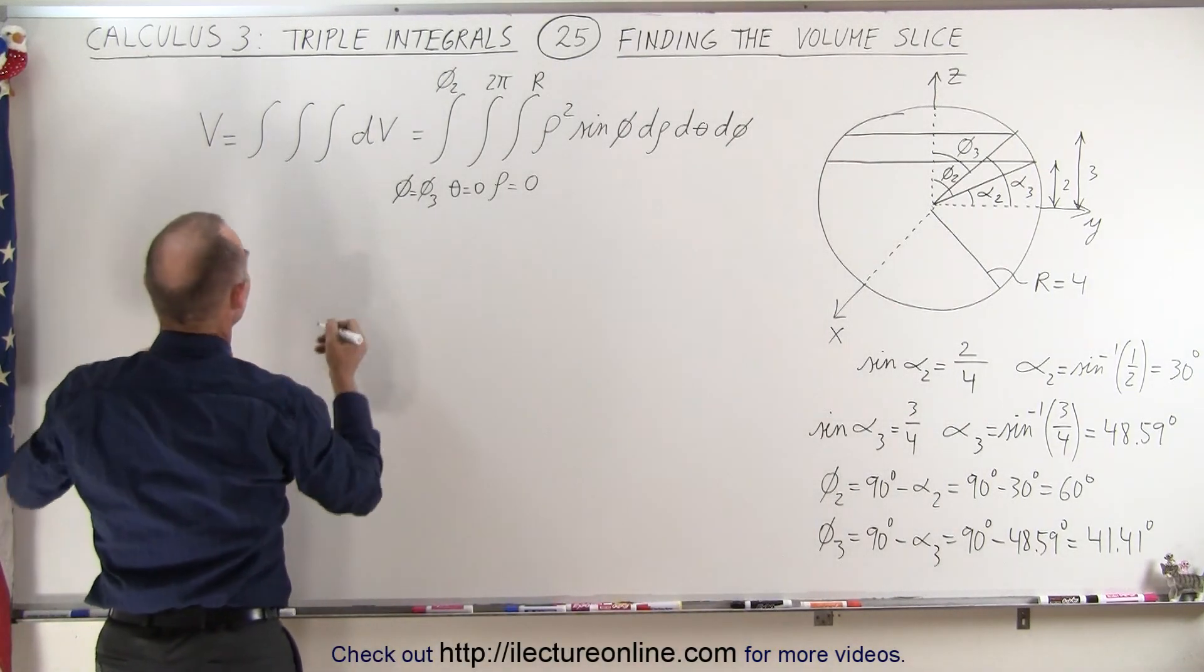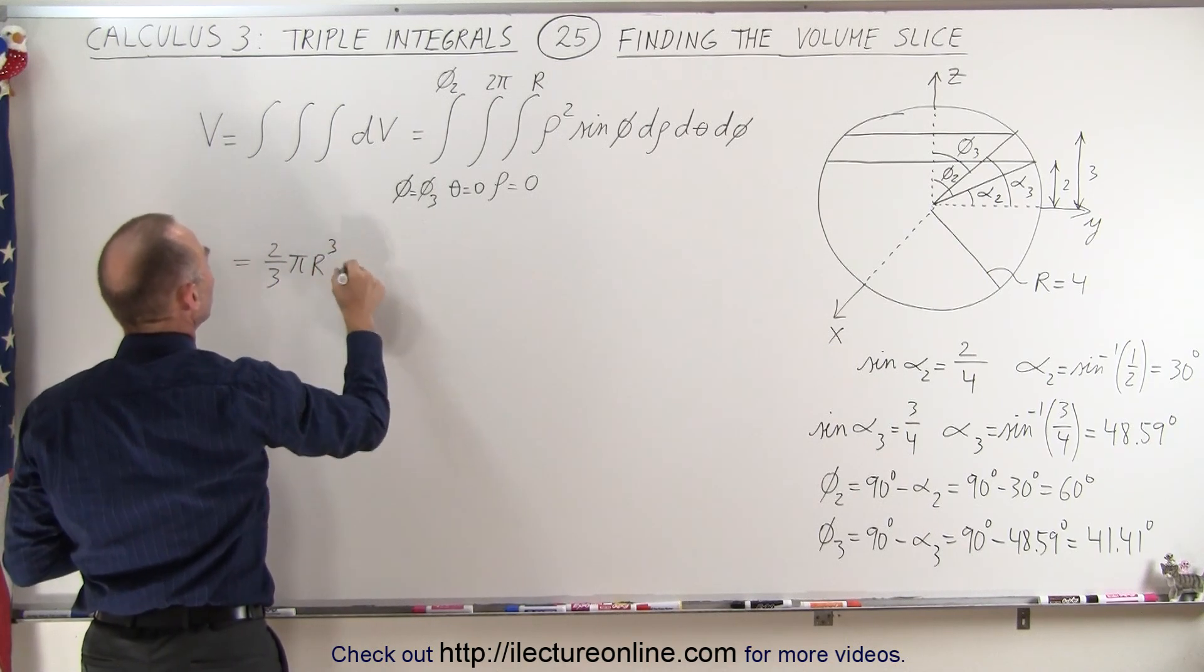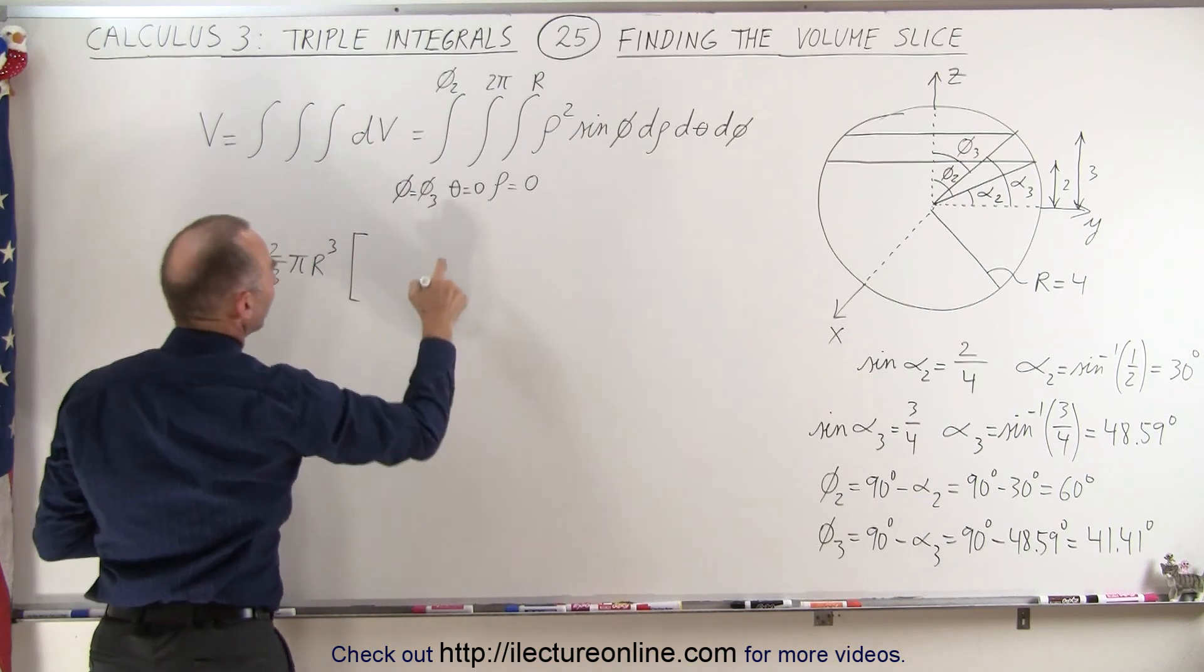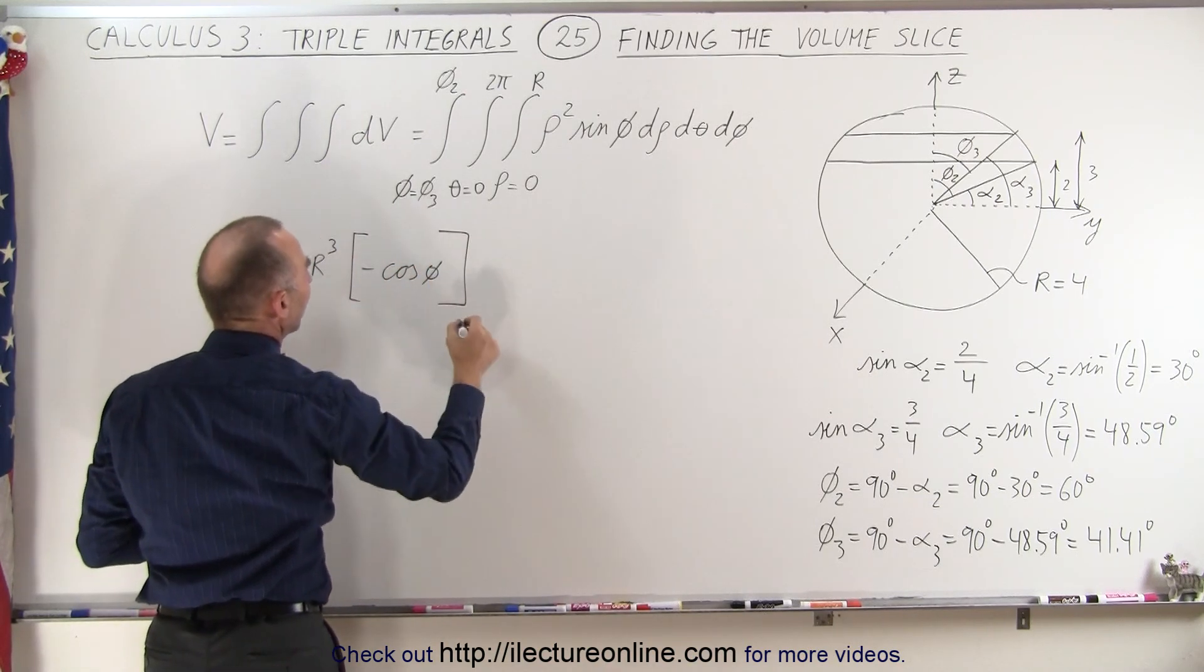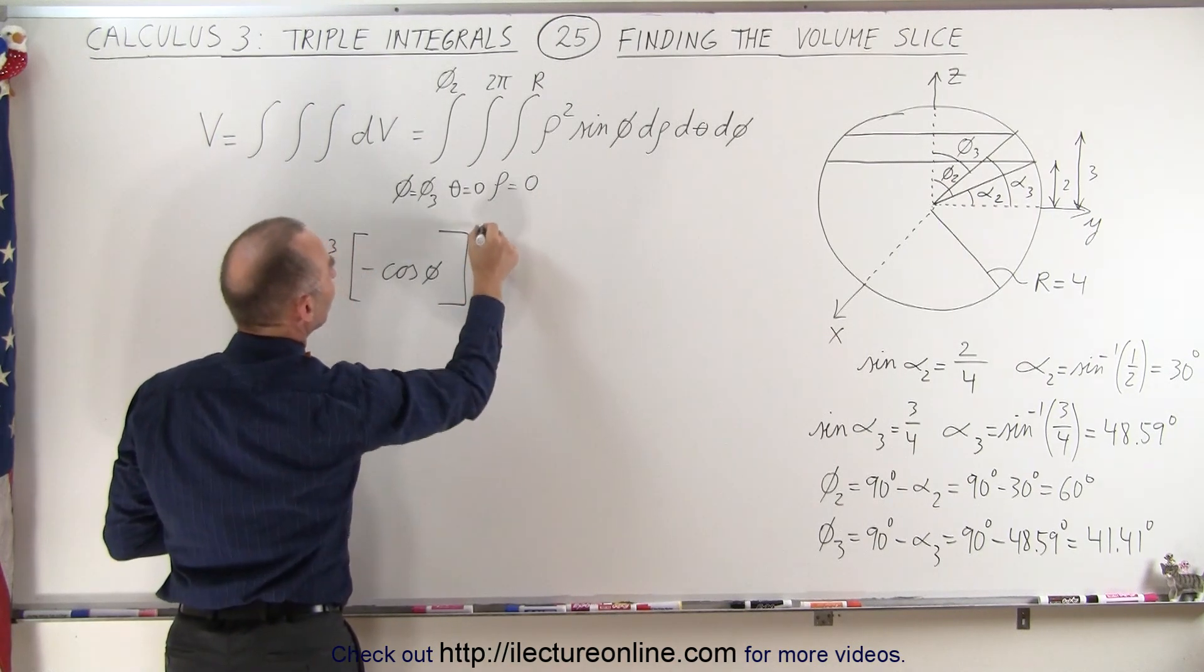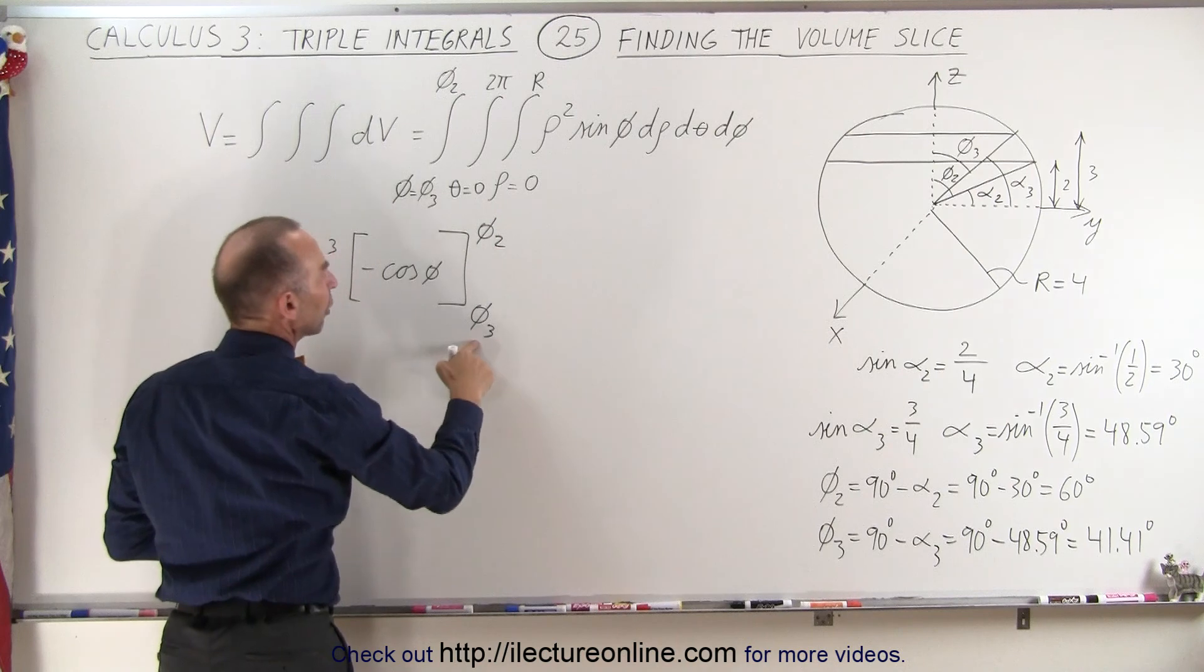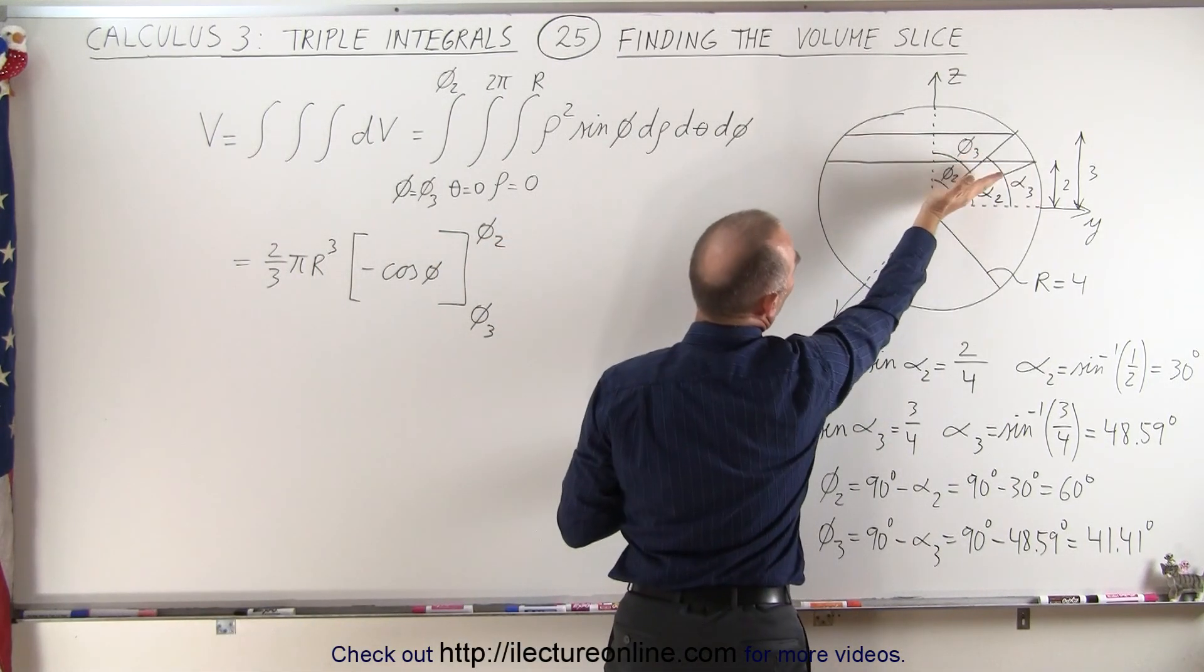So by now we understand that this is going to be equal to 2/3 π r³ times the negative cosine of phi evaluated from phi 3 to phi 2. From the lower limit to the upper limit, the lower limit would be phi 3, the upper limit would be phi 2.